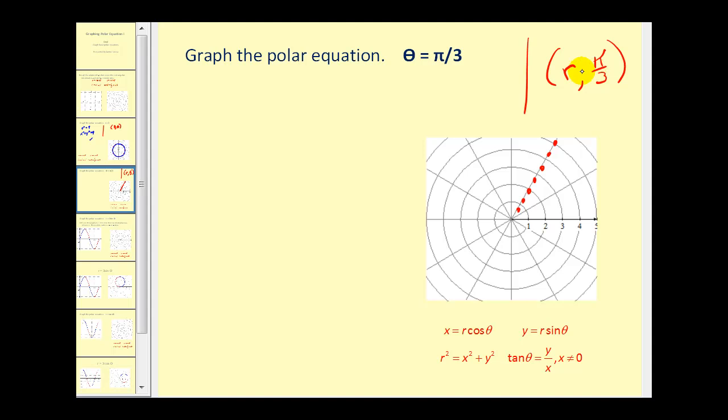And if r is negative, remember we'd be plotting points on the ray pointing in the opposite direction or along here. So theta equals pi over three is actually a line that would look like this.